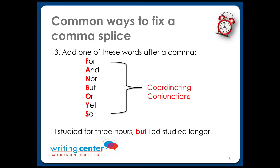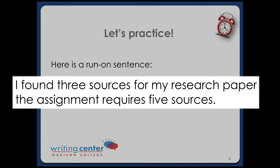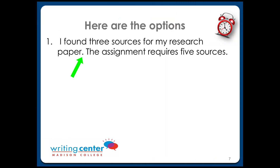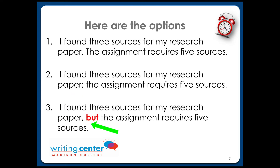Let's practice. Take a look at the run-on sentence on your screen. Pause the video and rewrite it — remember, you have at least three options. The first way is to add a period, making two completely separate sentences, like you see in the first option. The second way is to add a semicolon, like in the second statement. Another option is to insert a comma along with one of the FANBOYS words. In this sentence, the writer chose the word 'but' — that's a great choice.